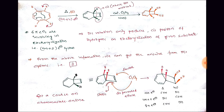We need to understand what conrotation and disrotation are. In conrotation, during electrocyclization through the concerted mechanism, if the two groups or two bonds move in the same direction — clockwise or both counterclockwise — that is called conrotation. If the two groups or bonds rotate in opposite directions, that is called disrotation.